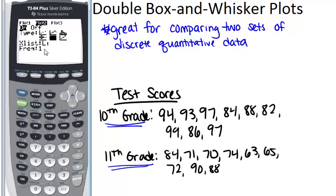where it says L1 for list one. For my second box and whisker plot I actually want it to be list two so I need to enter in list two by pushing second two and now I'm good to go.